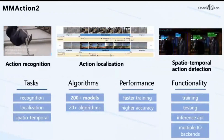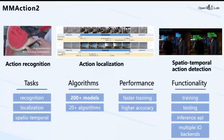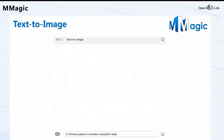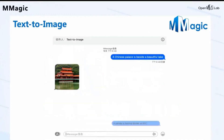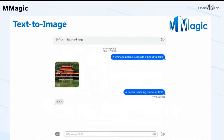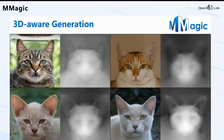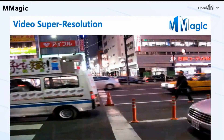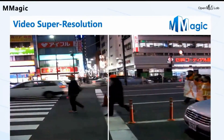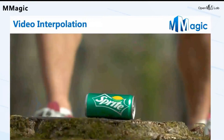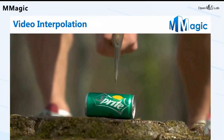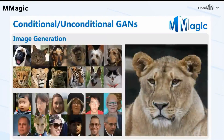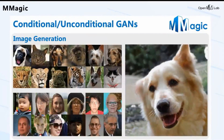We have supported over 20 different algorithms and 20 different datasets for video understanding. MMagic originates from MMEditing and MMGeneration. It unlocks the magic of generative AI and is a powerful toolbox that supports low-level algorithms based on CNNs, GANs, and diffusion models. MMagic supports popular applications including image restoration, text-to-image, 3D-aware generation, inpainting, matting, super resolution, and more.